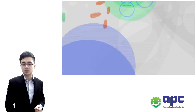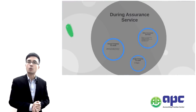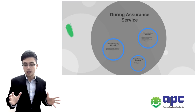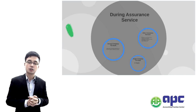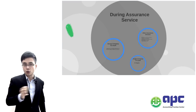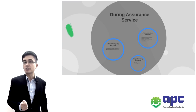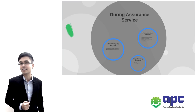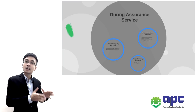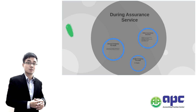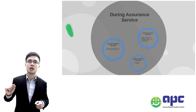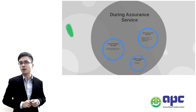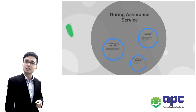Now let's come to chapter two: during the assurance services. There will be quite a lot of things to cover here. During assurance services, it can be divided into audits and non-audits. Audit means we are going to check the client's financial statements, but non-audit means we're not going to check the financial statements — rather we are going to check other things. First of all, audit assurance engagement.